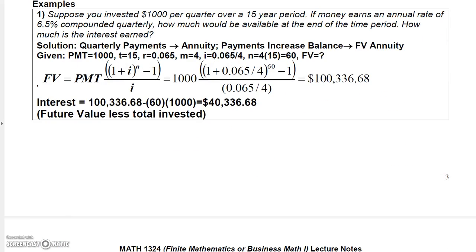The first example says: suppose you invest $1,000 per quarter. This 'per quarter' is what makes this an annuity. If you think about it, this $1,000 per quarter investment is going to increase the balance. And so since these payments are going to increase the balance, this must be a future value annuity.